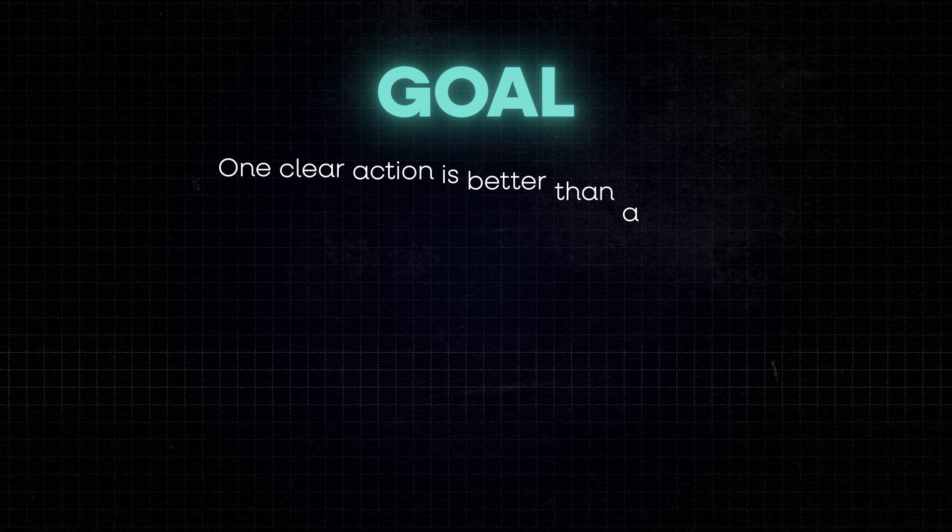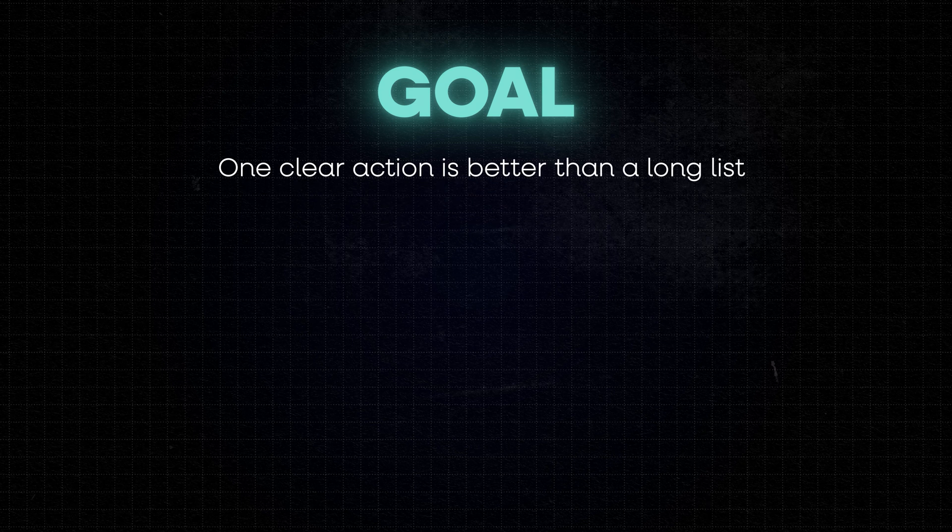The key is not overloading Copilot with everything, but asking exactly what you want it to do and using the GCSE framework to structure that prompt. Now, let's dive into how much information is enough for each of the four components. For the goal section, one clear action is better than a long list.